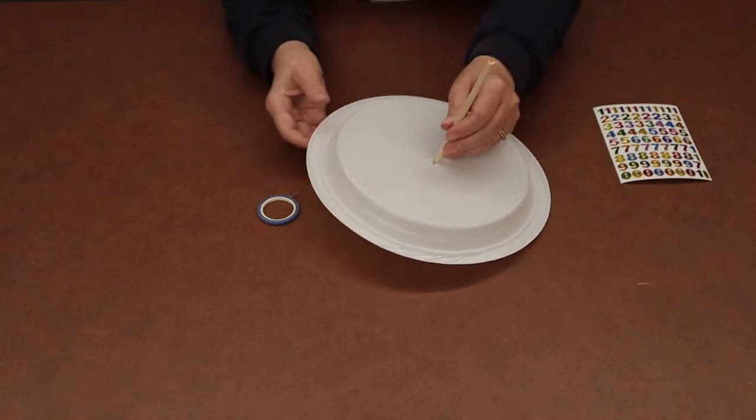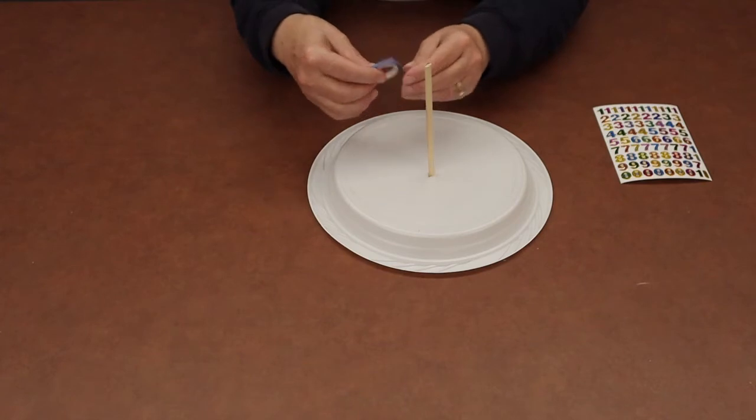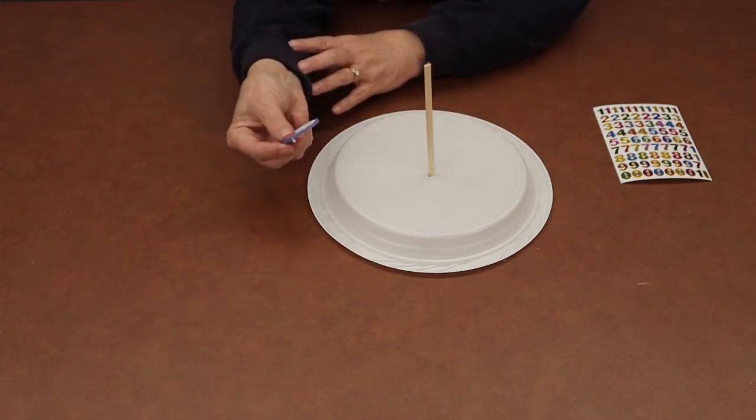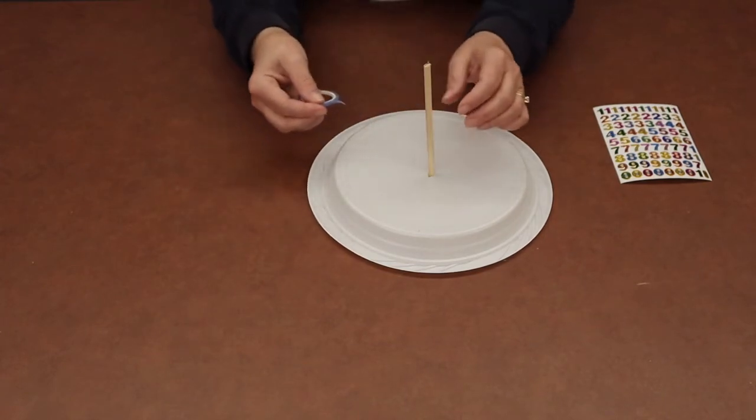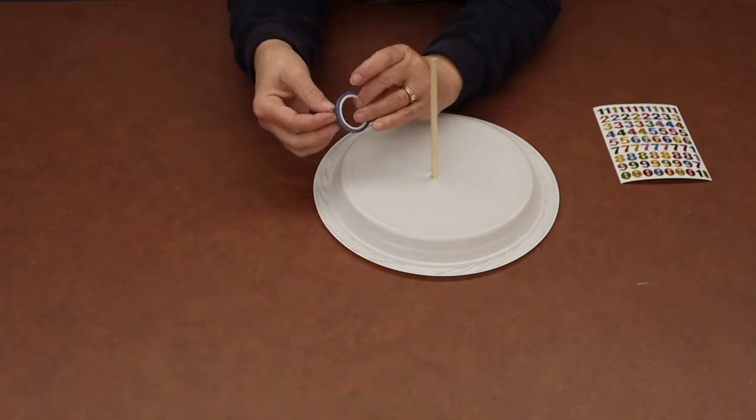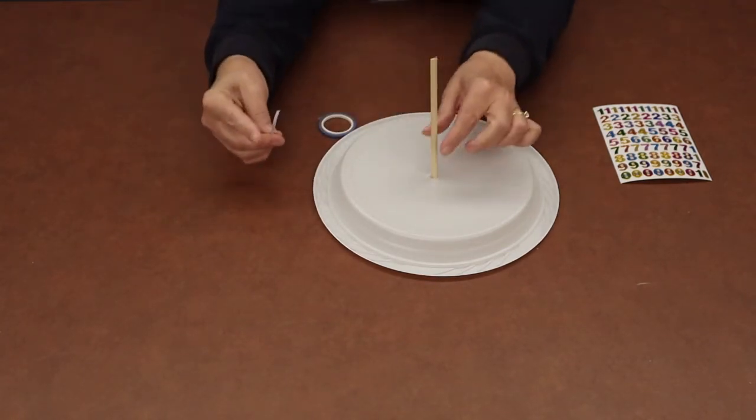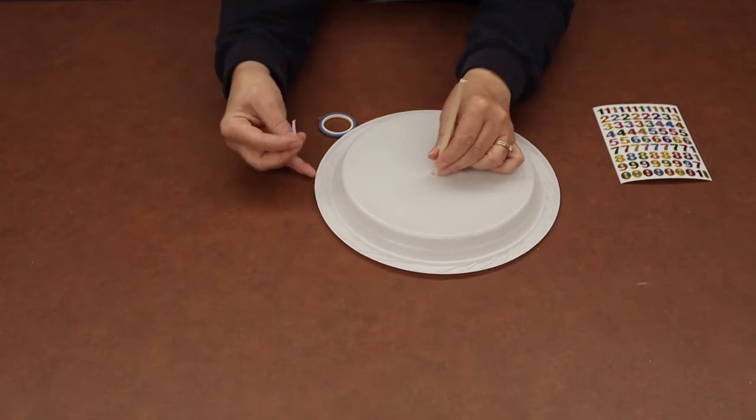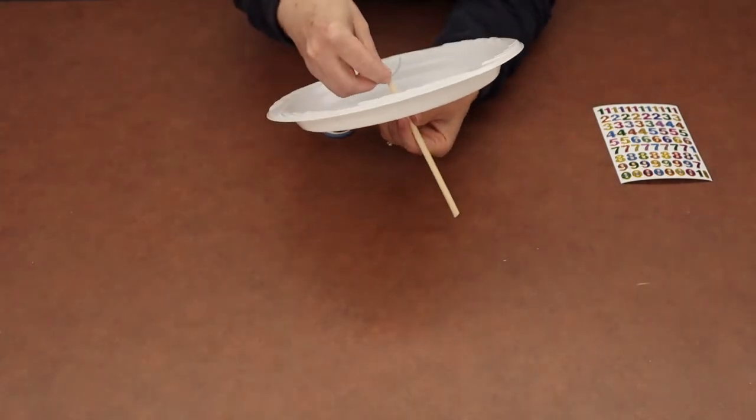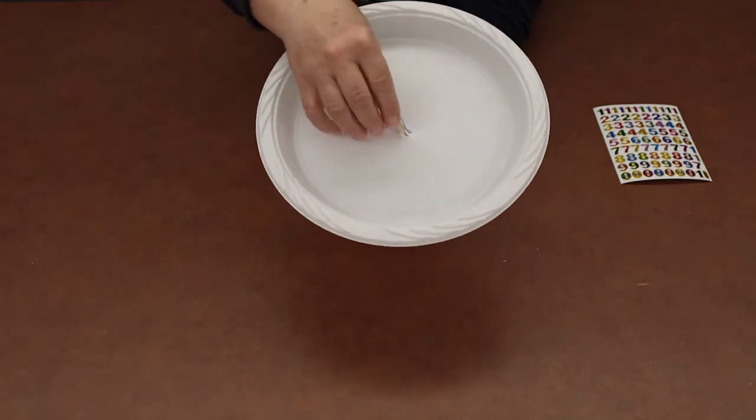And if it doesn't quite stand up, or if the hole is just a little too big, you can take your tape that's in your project and you can tape around the hole. Or in this case, what I'm going to do is take the tape on the underside and see if I can make my dowel stand up a little bit straighter. So I'll just take it and attach it like that.